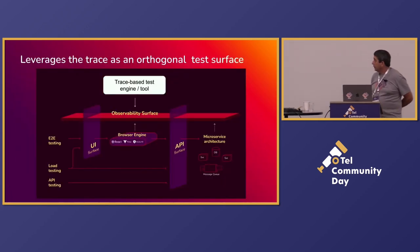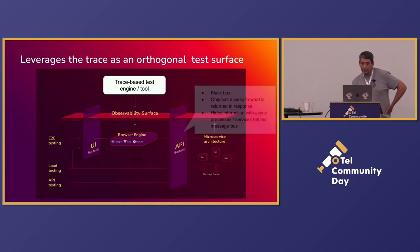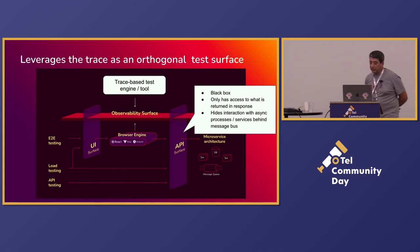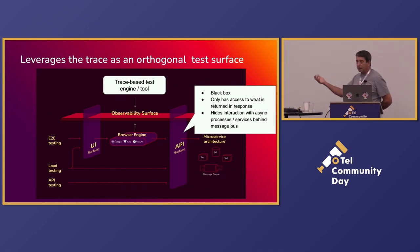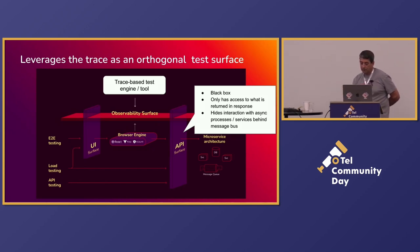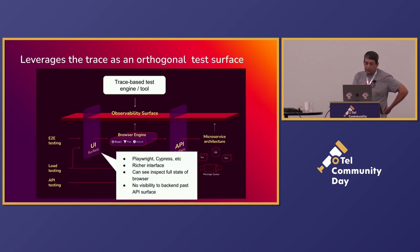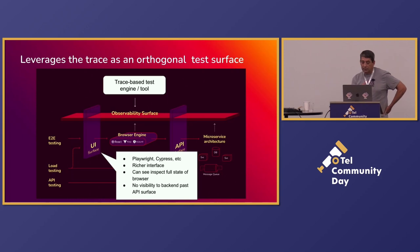A new diagram we're using to talk about this. Typically with the API surface when you're testing against it — doing API tests — it's black box, it's really flat. You hit the API, you get back the response, you get back the status code, you don't get a lot of information. And once you have a message bus or async processes behind it, it's really hard to tell what's going on. The browser test tools are a little bit richer — you can tell the state of the browser, you can get more information — but they still stop providing visibility at the API surface.